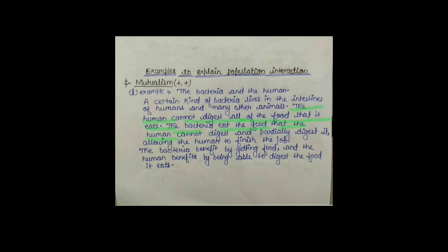मतलब इसमें क्या हो रहा है — Bacteria है जो Intestine में present है। Human जो भी food लेता है, सारे को Digest नहीं कर सकता। तो Intestine में जो Bacteria present है, वो जो food Human digest नहीं कर सकता उसको खा जाता है, या partially Digest भी कर देता है — तो Human का digestion process भी हो गया, और Bacteria को food भी मिल गया। तो यह Mutualism है, यानि Symbiosis — इसमें दोनों ही Species को फायदा हो रहा है।